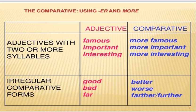Irregular comparative forms: bəzi sifətlər bu qaydıya tabi olmurlar. Good müqayisə dərəcəsində kökdən dəyişir — olur better. Bad müqayisədə olur worse. Far-ın iki cür müqayisə dərəcəsi var: farther and further. Much/many → more, little → less.